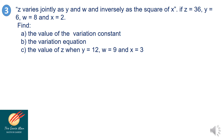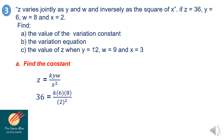Example number 3: Z varies jointly as Y and W and inversely as the square of X. If Z is equal to 36, Y is equal to 6, W is equal to 8, and X is equal to 2, find the constant, the variation equation, and the value of Z when Y is equal to 12, W is equal to 9, and X is equal to 3. First, Z is equal to K times W times Y all over X squared. Substituting: 6 times 8 divided by 2 squared is 48 divided by 4, which equals 12. So 36 is equal to 12K. Dividing both sides by 12, K is equal to 3.